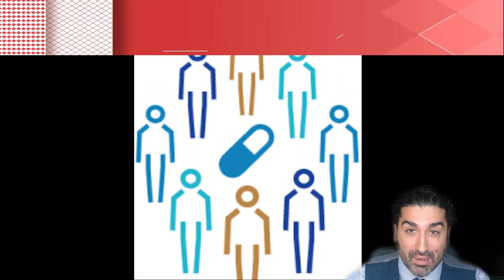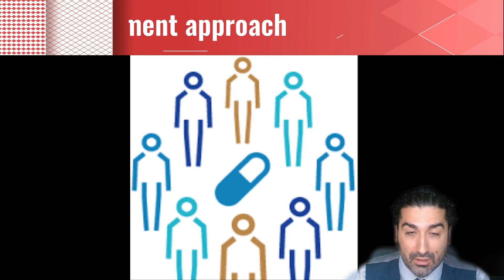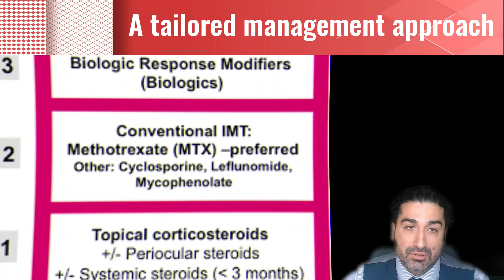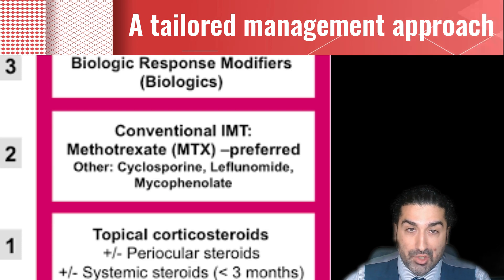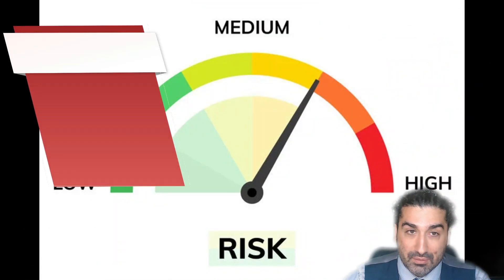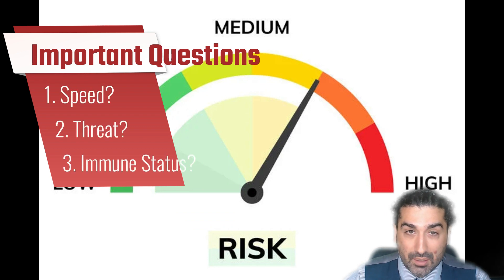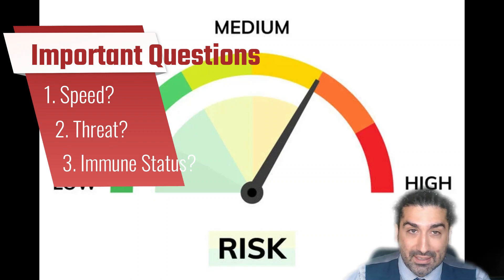Treatment of uveitis: each patient is different and every treatment approach needs to be bespoke for the individual. We have a ladder to follow which starts with drops, then oral tablet steroids, followed by second-line oral steroid-sparing agents or agents delivered by other means, then biologics — and we always want to be proactive rather than reactive. Three important questions: one, speed — is this slow or fast, limited if less than three months or persistent if greater? Two, threat — can this uveitis affect the person's vision? Three, is there any immune compromise? It's also very important to consider whether it affects one eye or both, as bilateral uveitis is more likely to be linked to systemic diseases.